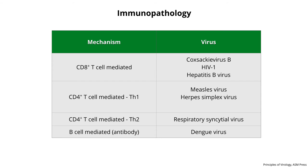Immunopathology is very specific — it typically involves discrete components of the immune response. Remember we talked about CD8 and CD4 positive T cells, the two classes of CD4 positive TH1 and TH2 helper cells which make cytokines that do different things, and antibodies made by B cells. There are different examples of immunopathologies based on each type: CD8 T cell-mediated examples include Coxsackievirus, HIV, hepatitis B virus; CD4-positive TH1-mediated include measles and herpes simplex; TH2-mediated includes respiratory syncytial virus; and B cell-mediated includes dengue virus antibody.